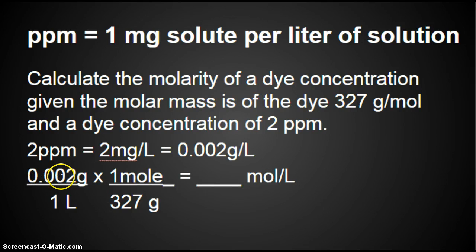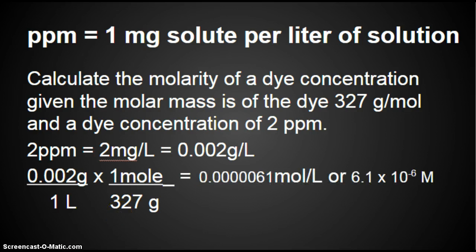0.002 times 1 divided by 1 divided by 327, and we get 0.000061 moles per liter, or 6.1 times 10 to the negative 6 molar.